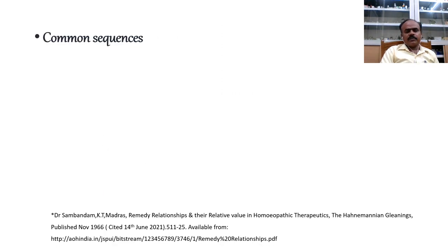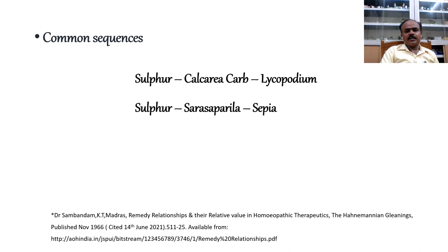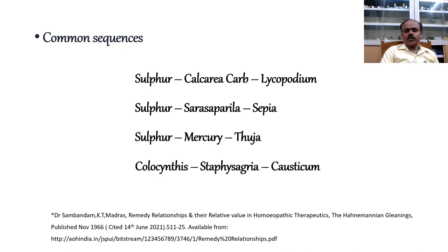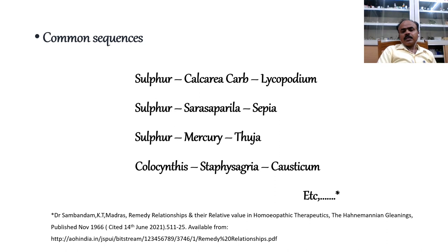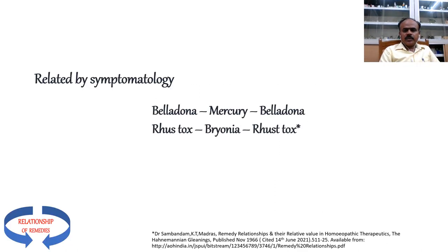Common sequences of remedies can be found in Kent's Lectures on Materia Medica. The commonest is Sulphur–Calcarea Carb–Lycopodium, commonly called SCL. Others include Sulphur–Sarsaparilla–Sepia; Sulphur–Mercury–Thuja; Colocynthis–Staphysagria–Causticum. The explanation of these cycles can be found under Fluoric Acid in Kent's Materia Medica. Related by symptomatology: Belladonna–Mercury, Belladonna–Rhus Tox, Bryonia–Rhus Tox.